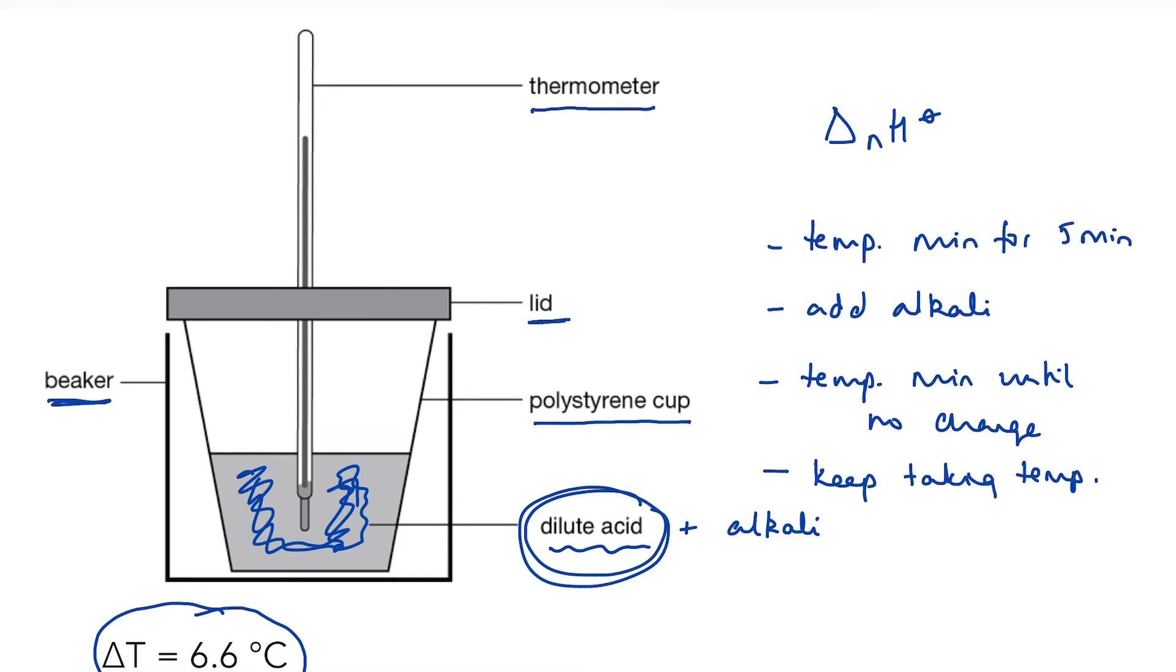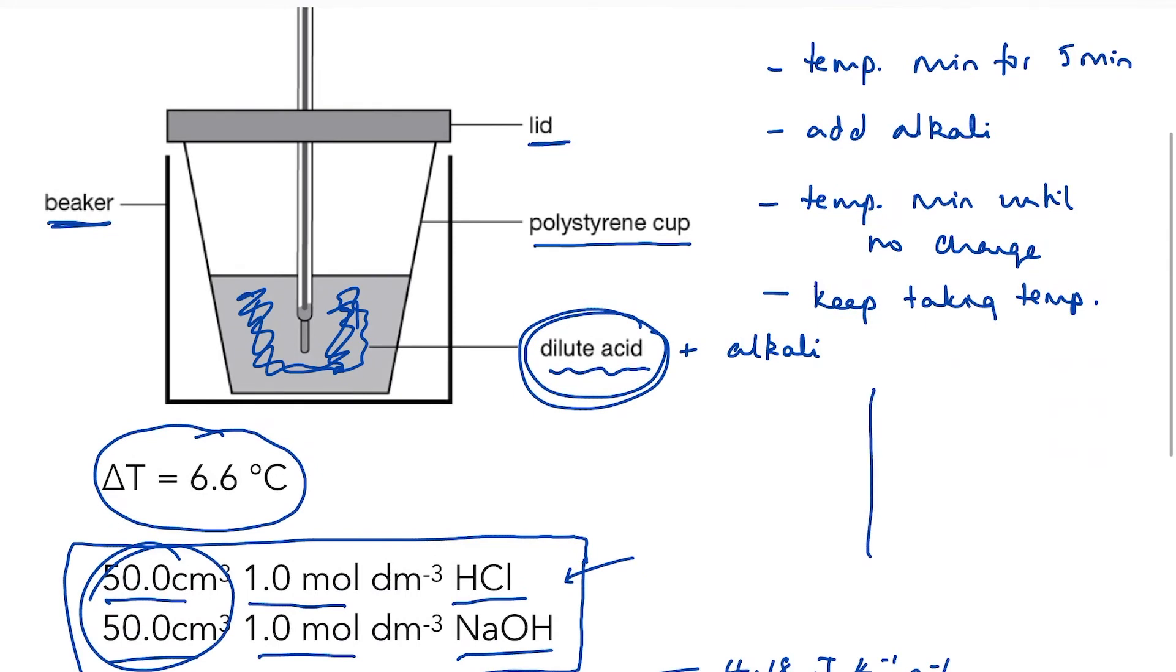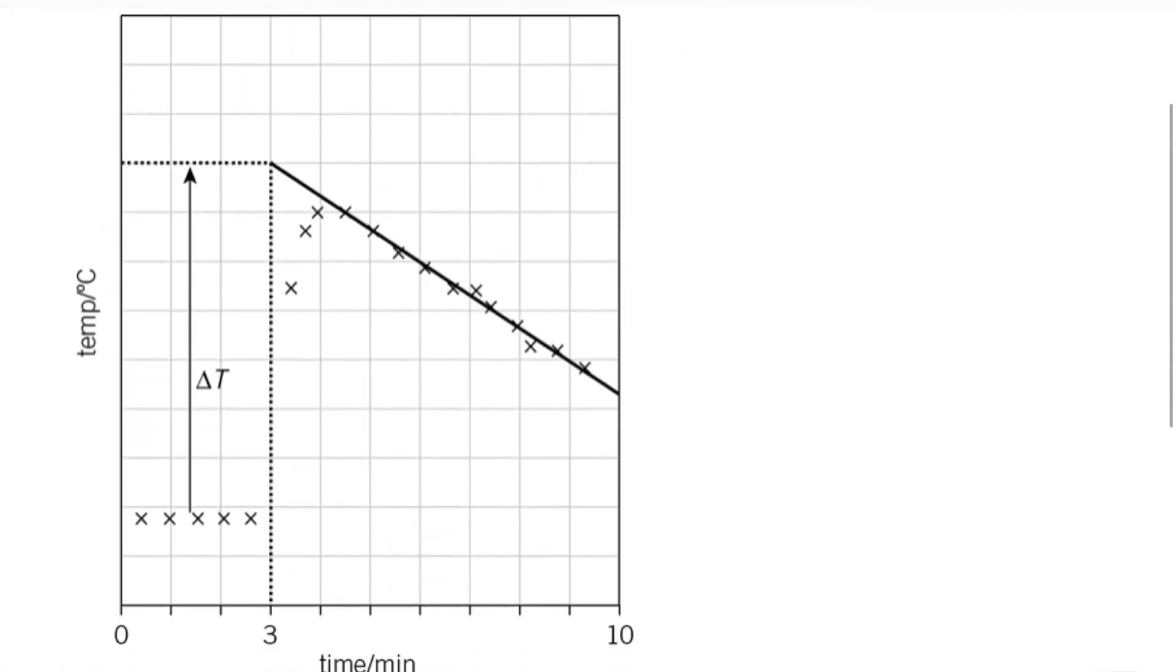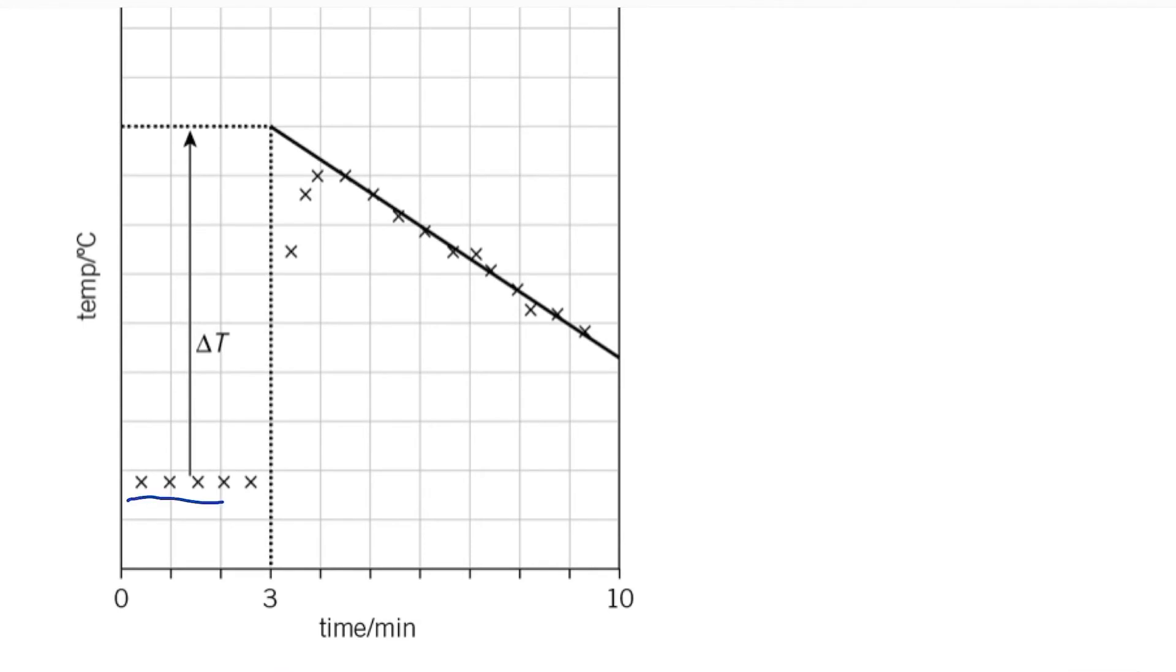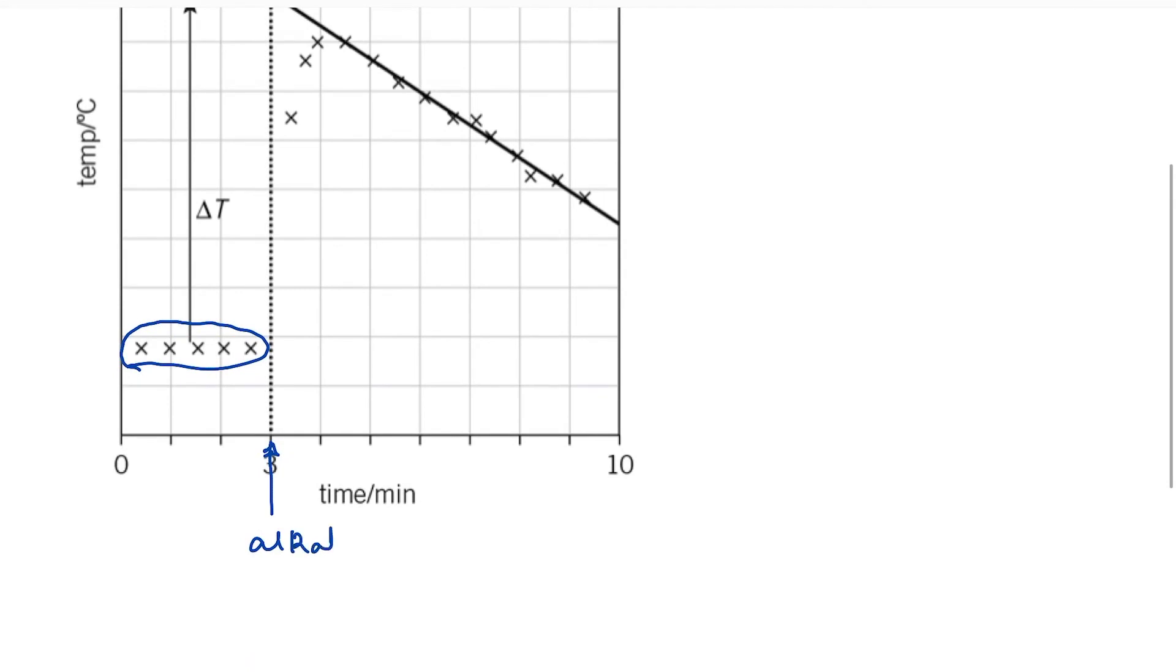And then we're going to plot a graph of temperature against time. And this is what it should look like. So to begin with, I just had acid in my polystyrene cup and I took the temperature every minute. In this case, it's slightly more than every minute until I hit the three minute mark. I then added the alkali. So this is the point at which the alkali is added. And you need to make a note of that time.